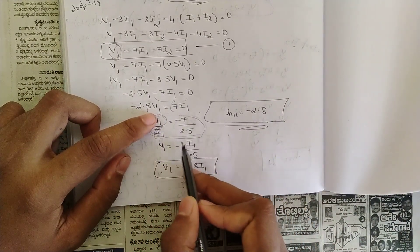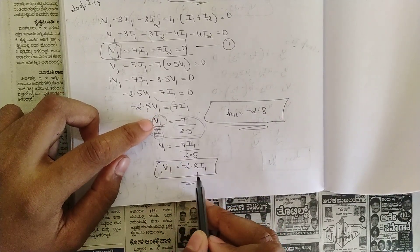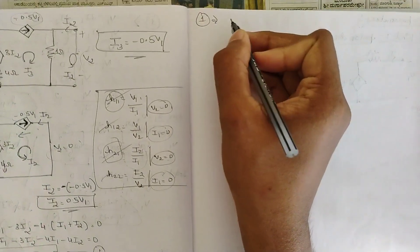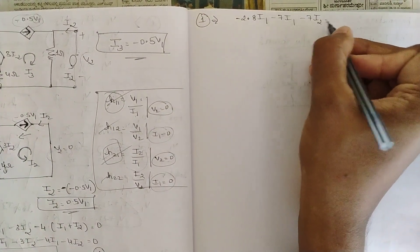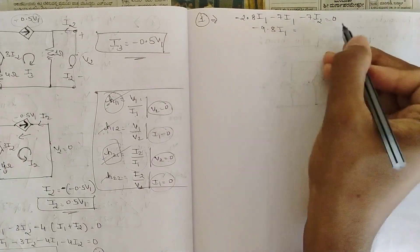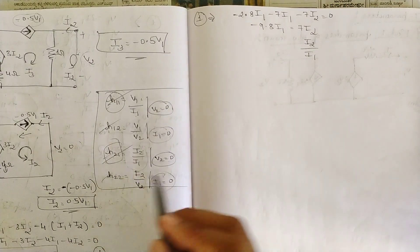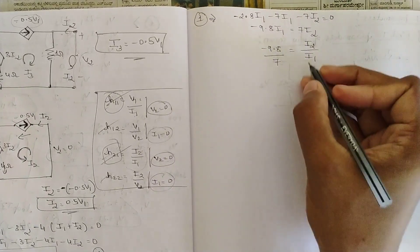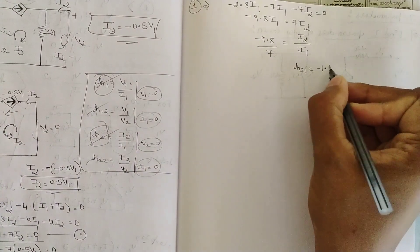Substituting v1 = minus 2.8·i1 back into Equation 1: minus 2.8·i1 − 7·i1 − 7·i2 = 0, which gives minus 9.8·i1 = 7·i2. Therefore h21 = i2/i1 = minus 9.8 / 7 = minus 1.4.